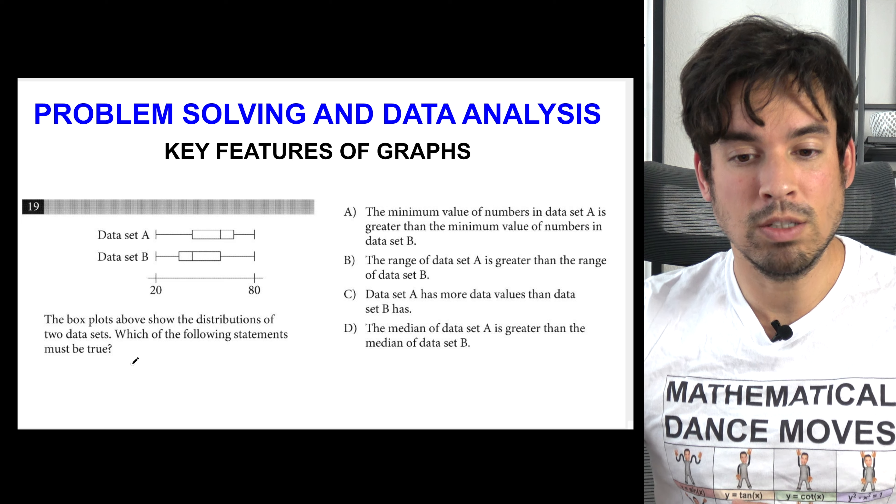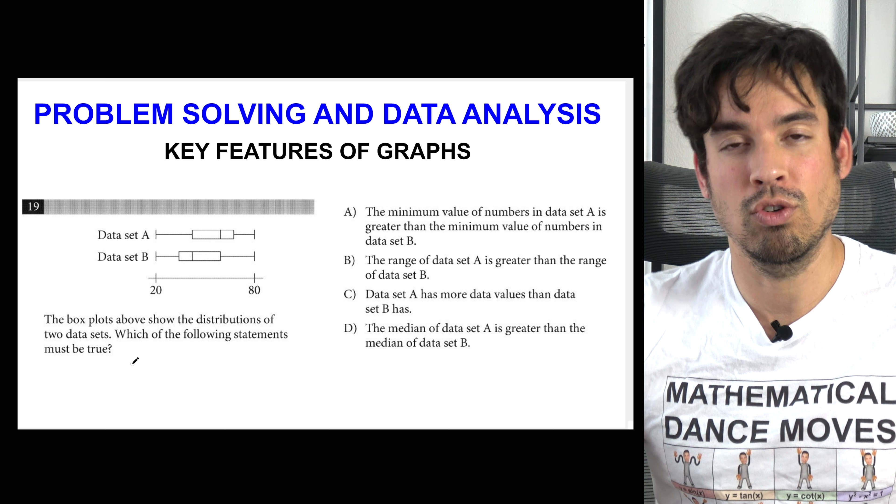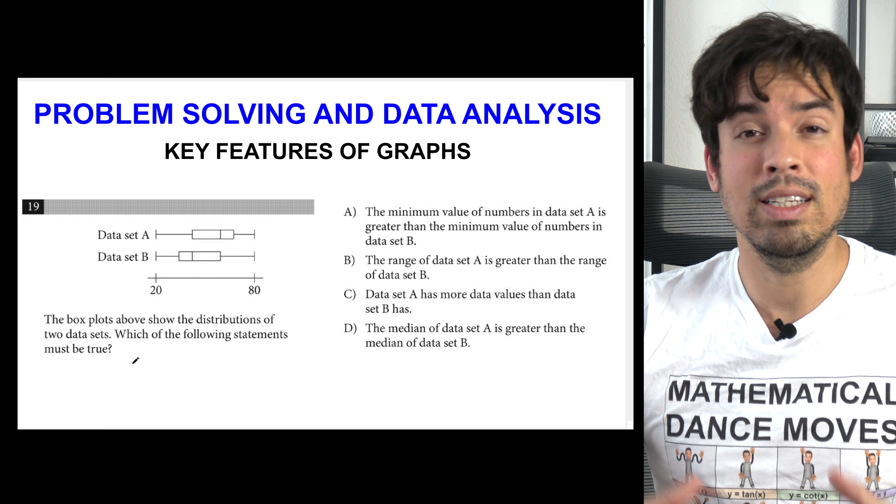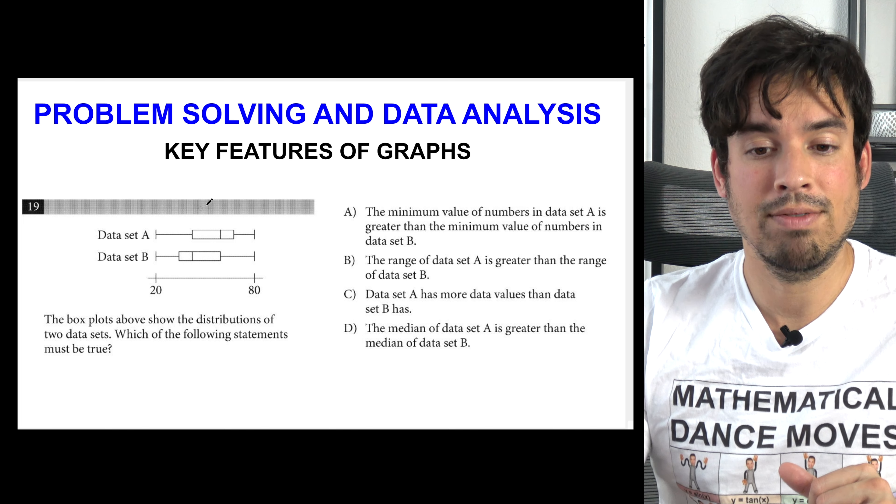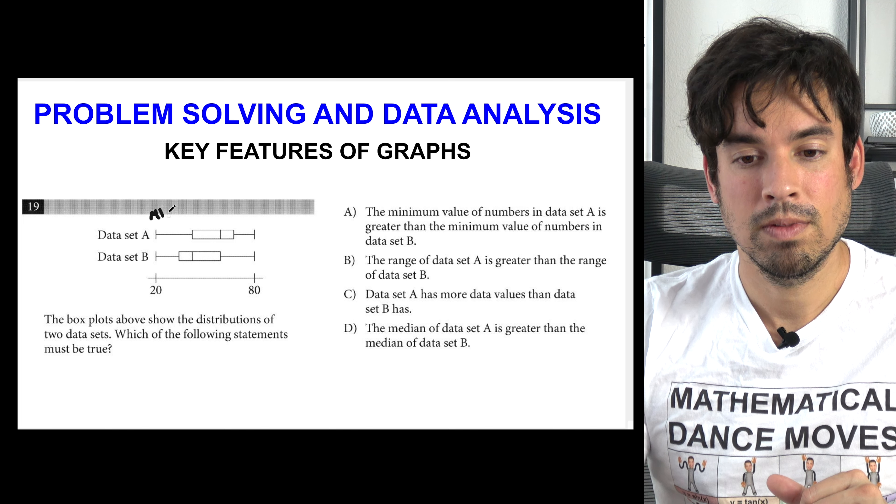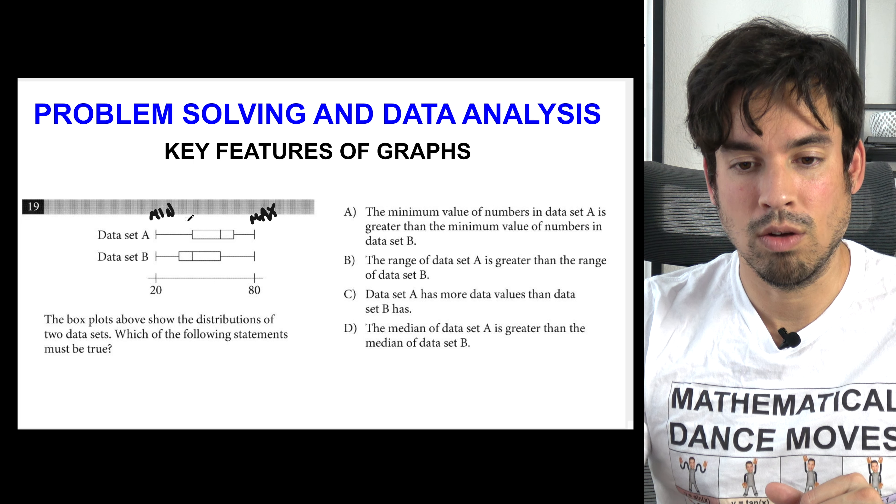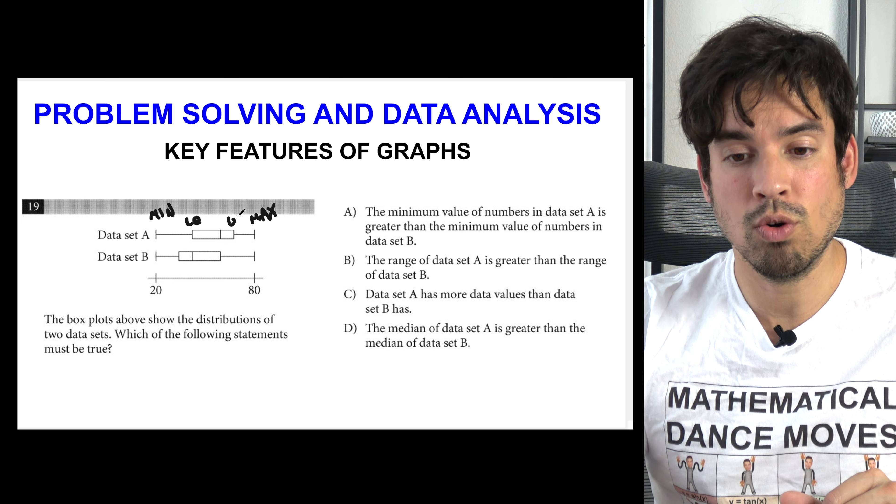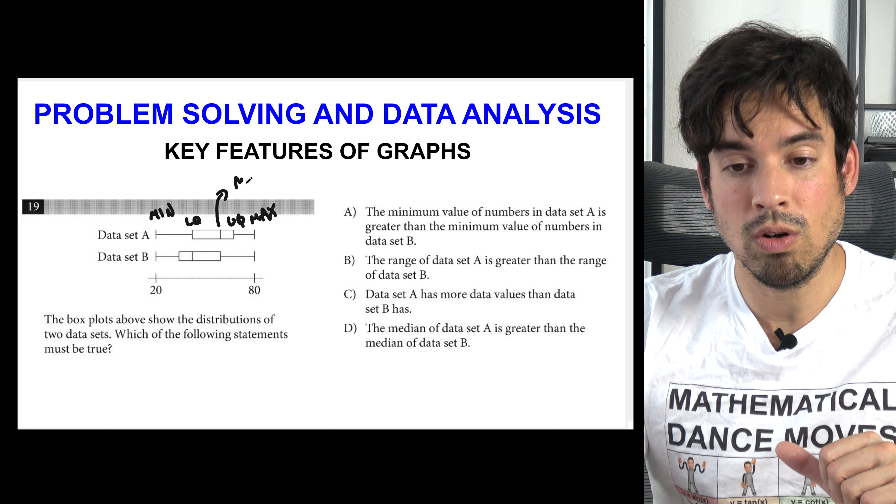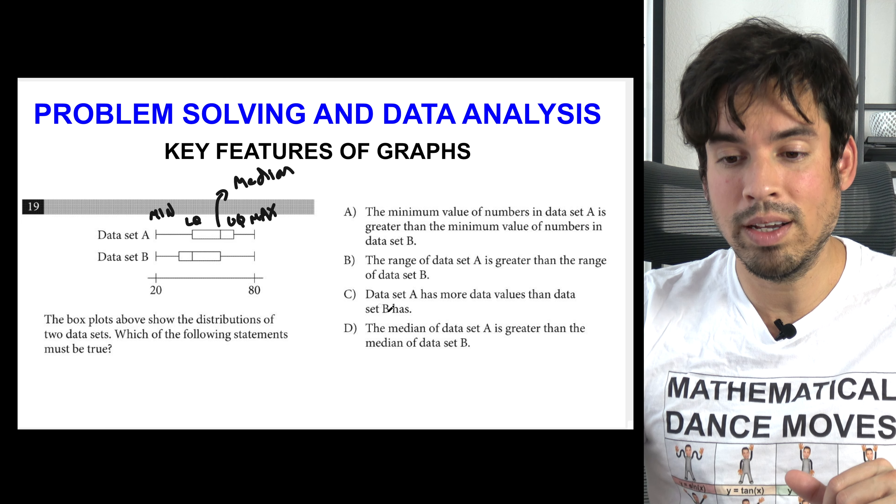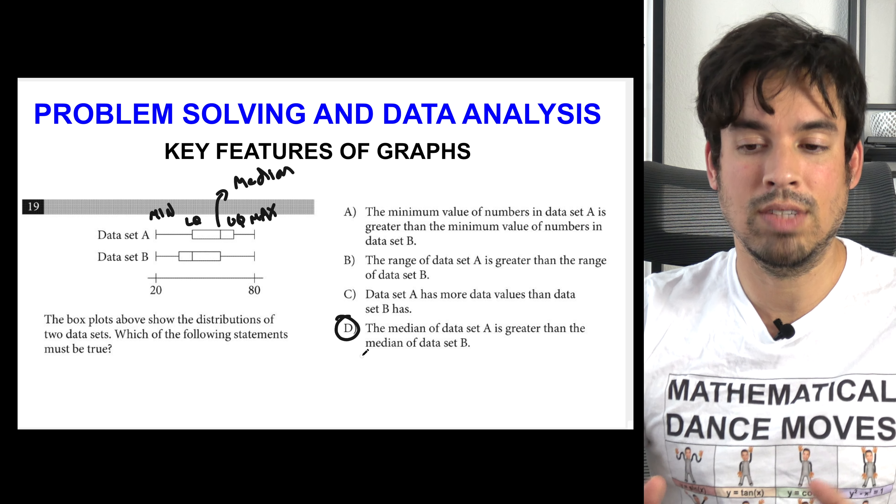Next we get to this one. It says the box plots above show the distributions of two data sets. Which of the following statements must be true? Here's why the College Board is trying to help you. As they continually test on box and whisker plots, they really just want you to get to know the five key points. This is the min, this is the max, this is the lower quartile, this is tested less often, and the upper quartile. But most importantly, the center line here is called the median. That's all they're testing on. So you can quickly see that D has to be the right answer because the only one that says the median of data set A is greater than the median of data set B.